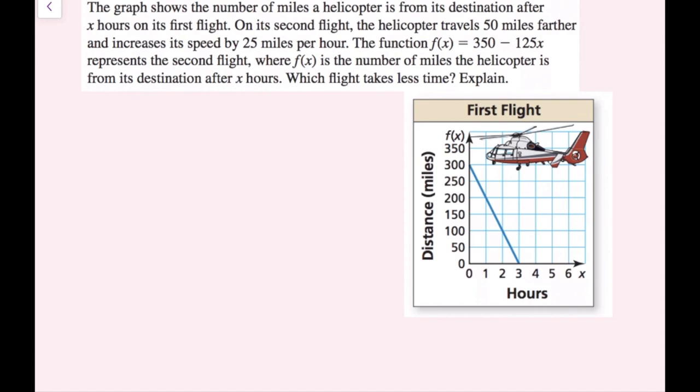The graph shows the number of miles a helicopter is from its destination after x hours on its first flight. On its second flight, the helicopter travels 50 miles farther and increases its speed by 25 miles per hour. The function f of x equals 350 minus 125x represents the second flight, where f of x is the number of miles the helicopter is from its destination after x hours. What flight takes less time? Explain.